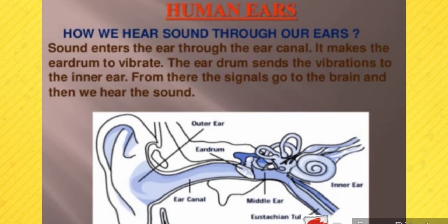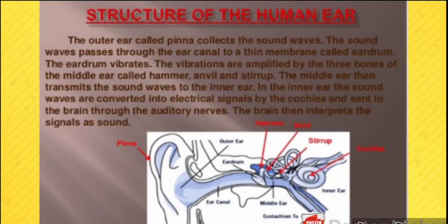Now let's study the human ear and its structure. Sound enters the ear through the ear canal and makes the eardrum vibrate. The eardrum sends vibrations to the inner ear, and from there signals go to the brain. In detail: the outer ear, called the pinna, collects sound waves and directs them through the ear canal to the eardrum. The eardrum vibrates, and these vibrations are amplified by three bones in the middle ear — the hammer, anvil, and stirrup. The inner ear's cochlea converts sound waves into electrical signals, which are sent to the brain through the auditory nerve, and the brain interprets them as sound.